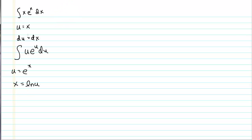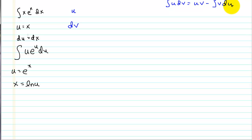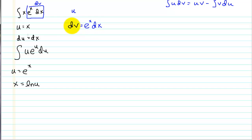So to use integration by parts, we have to pick something for dv and something for u. Our rule for picking dv is to pick the part that is complicated and integratable, so the e to the x dx part will be our dv, and the x left over will be our u — we've consumed the entire integrand. In the formula we have u, which is x, but we need v. We know dv, and to undo a derivative we integrate, so we integrate dv to get v.